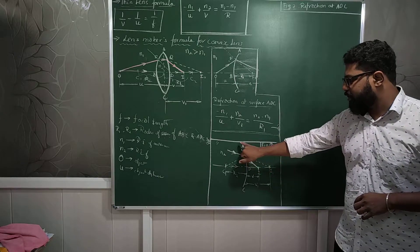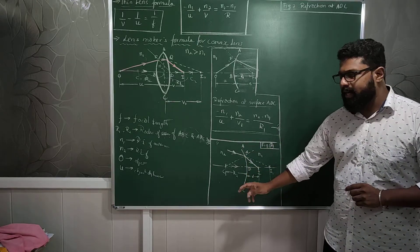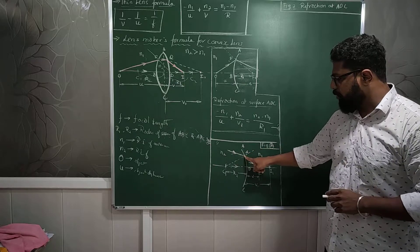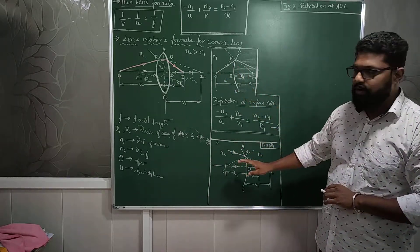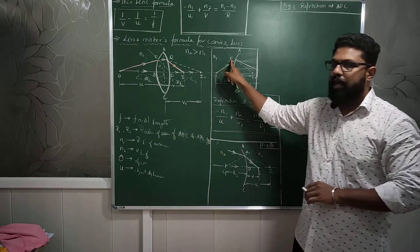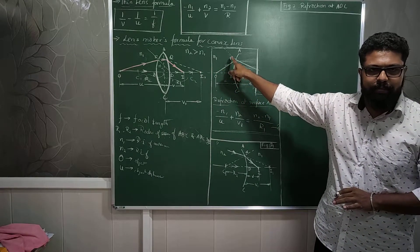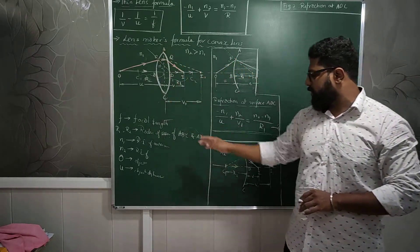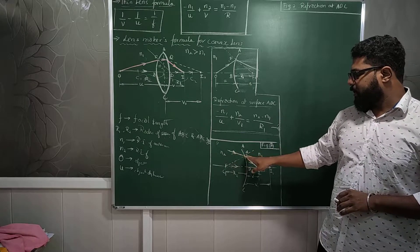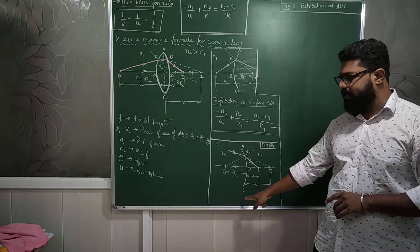Now in the refraction of ADC, we are considering this light ray to be coming from outer space, somewhere, randomly. We are not considering this point P at all, because this surface we are not considering. Imagining that only this surface is present. There is a light ray coming and falling at point Q on the surface ADC.